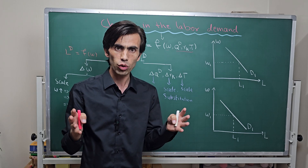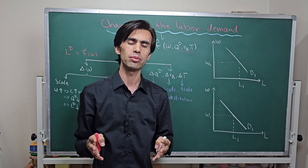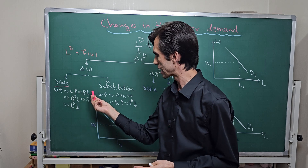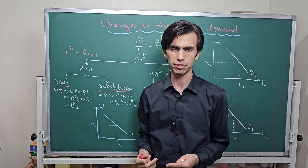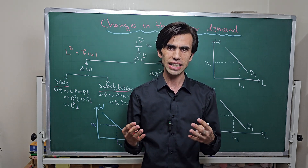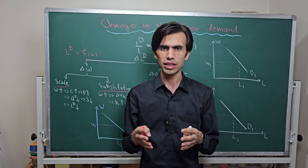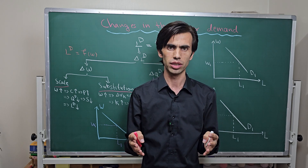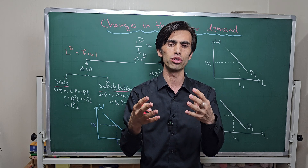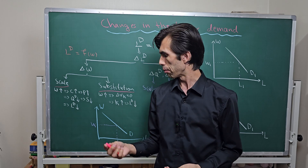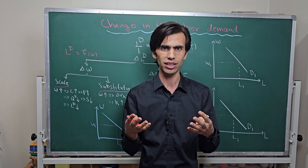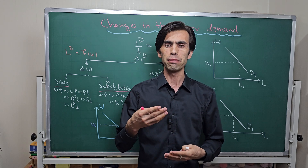When these factors change, labor demand will change. But the question is why labor demand changes. Labor demand changes due to two different effects: a scale effect and a substitution effect. The scale effect, also called the output effect, means that firms try to change the overall level of output they are producing. The substitution effect means that the company tries to maintain at least the current level of output but substitutes their factors of production.